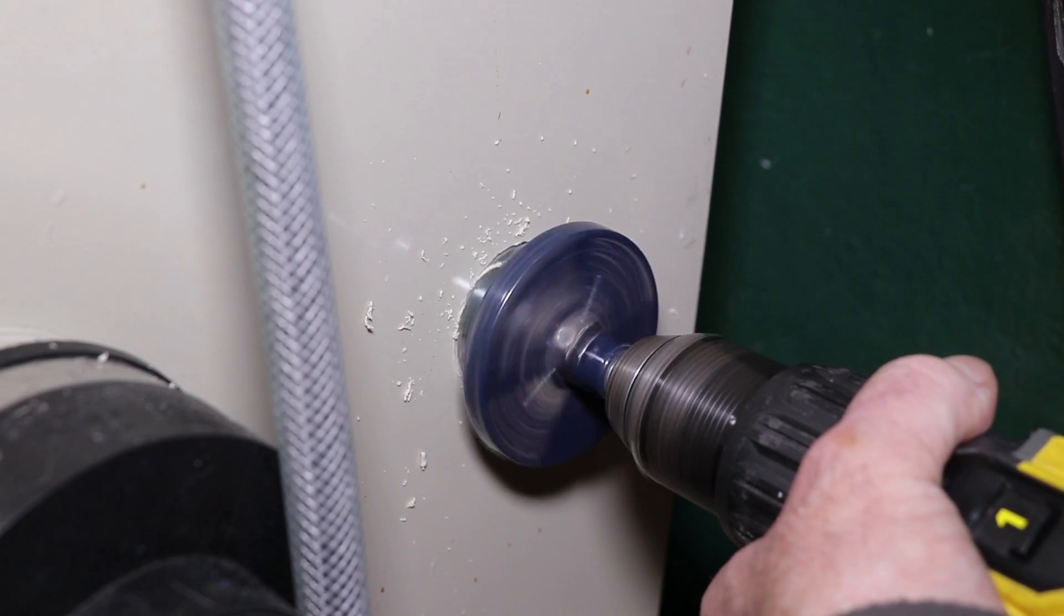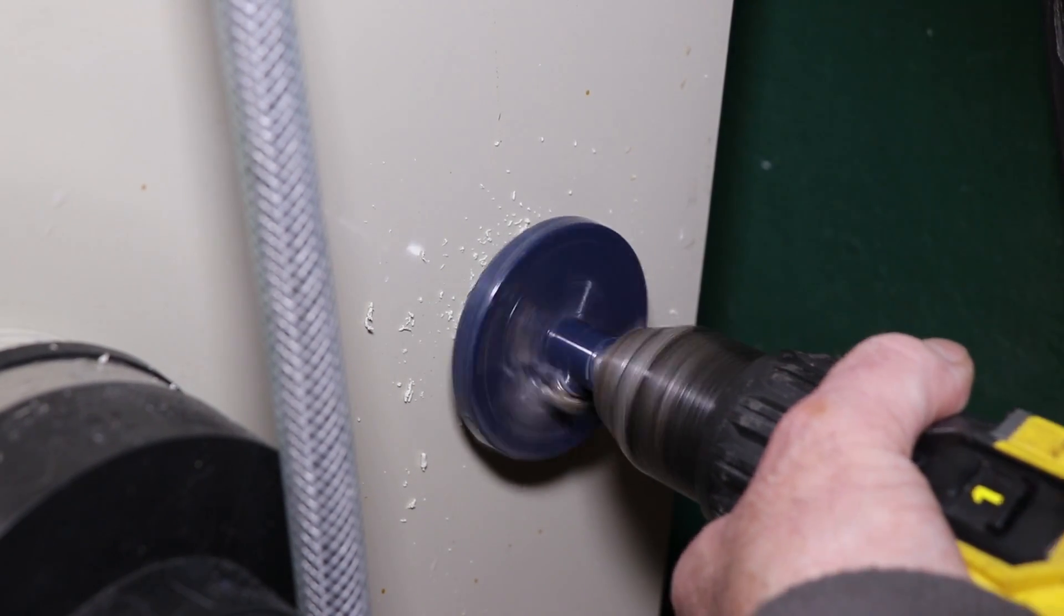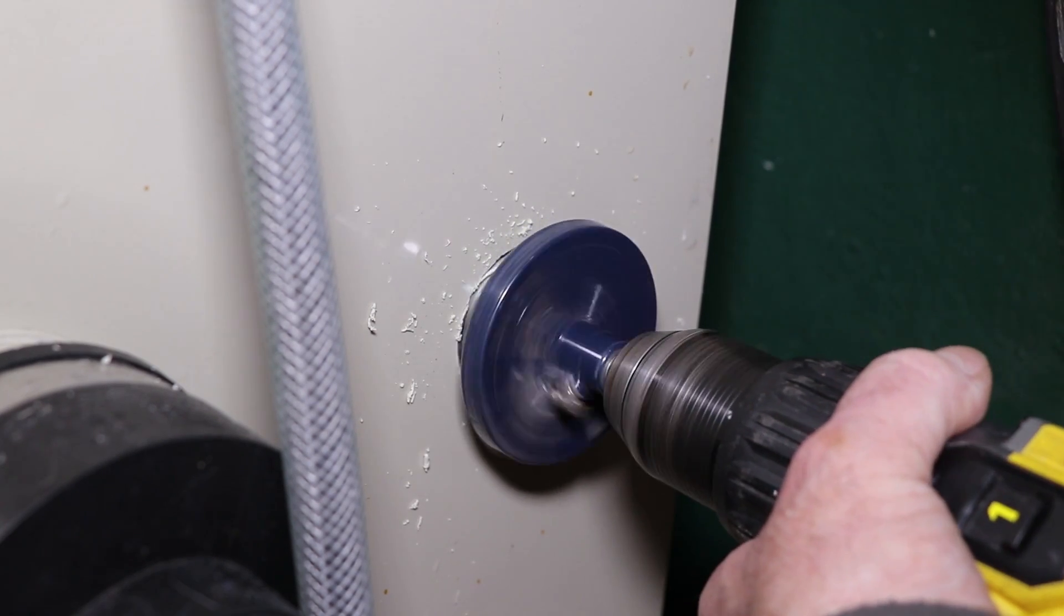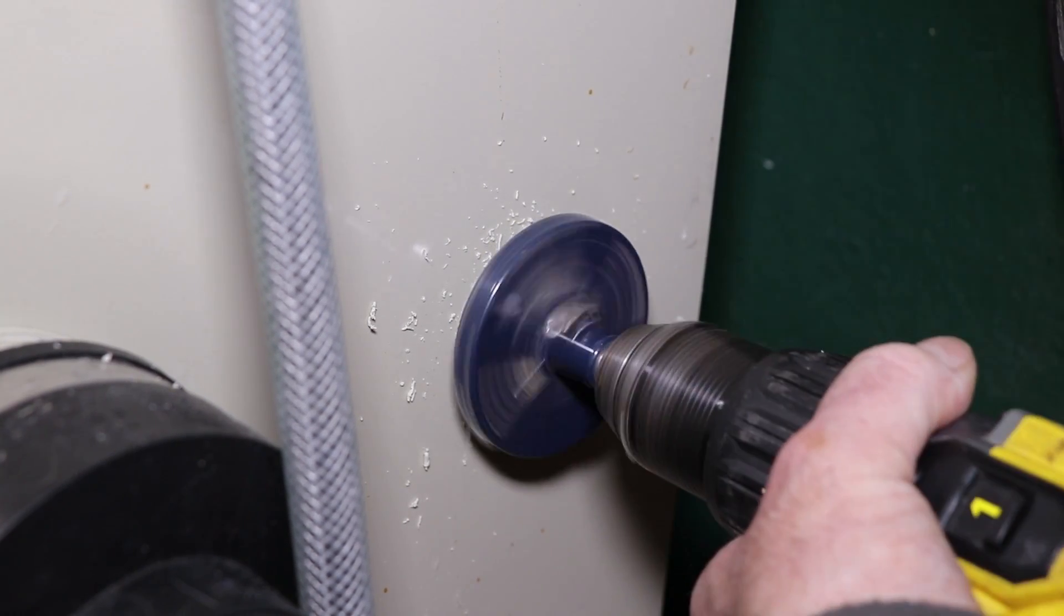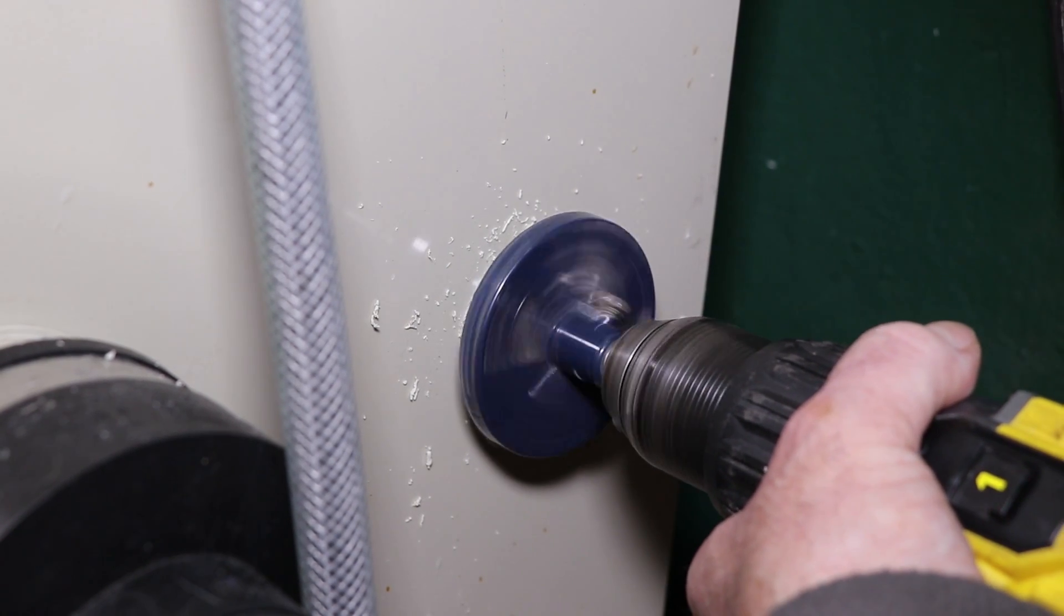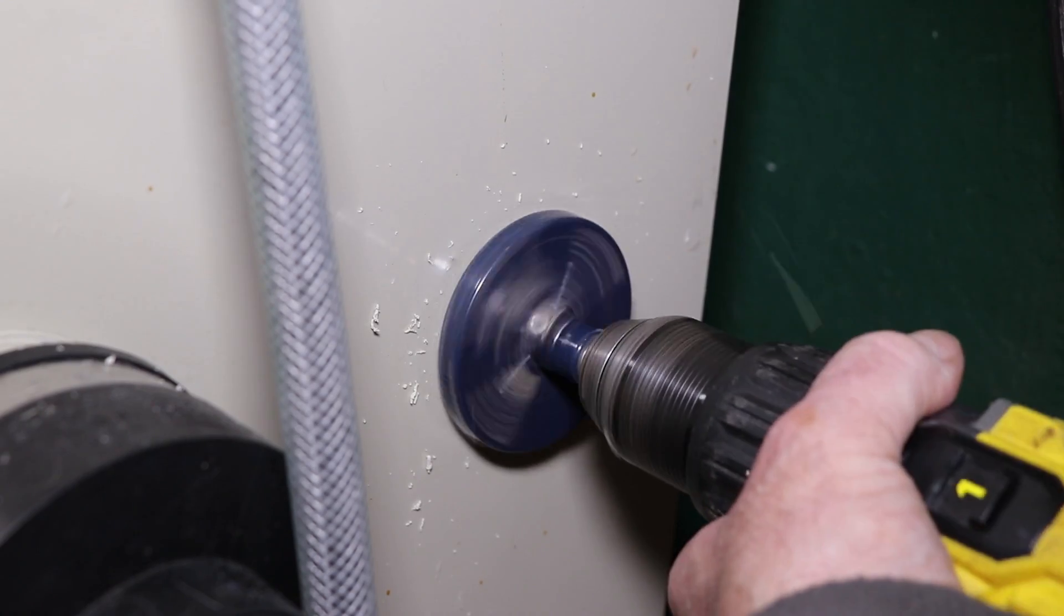Now the hole borer itself is actually a wood cutting bit, so it's just a really sharp wood cutting bit. It's all about just taking your time, not letting it get too hot, and making sure it cuts the plastic instead of melting through it or you'll have nothing but problems.